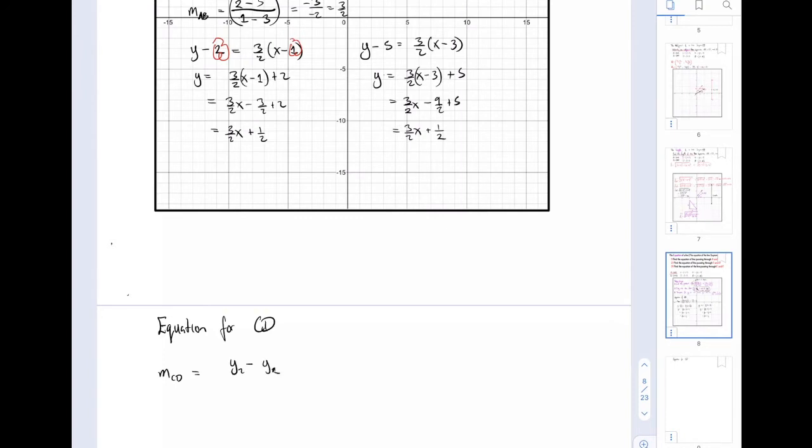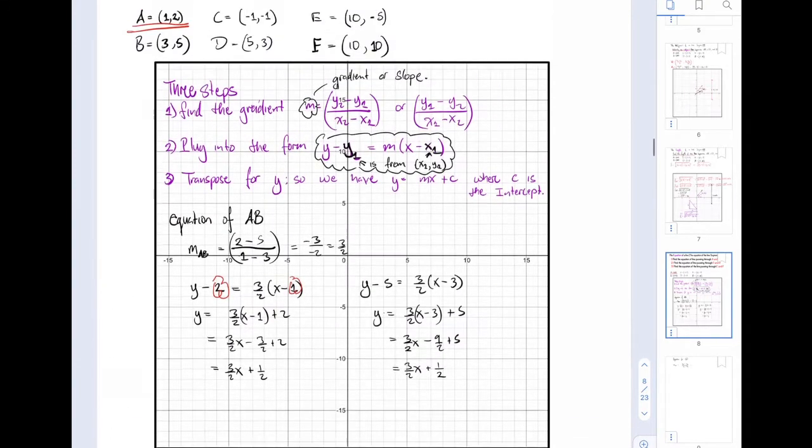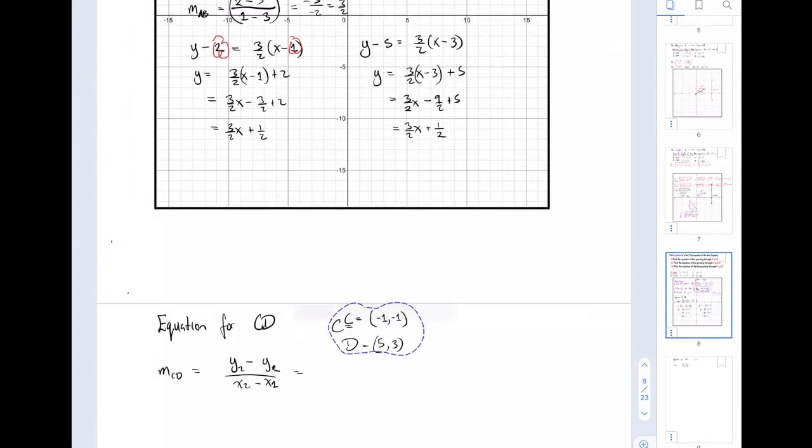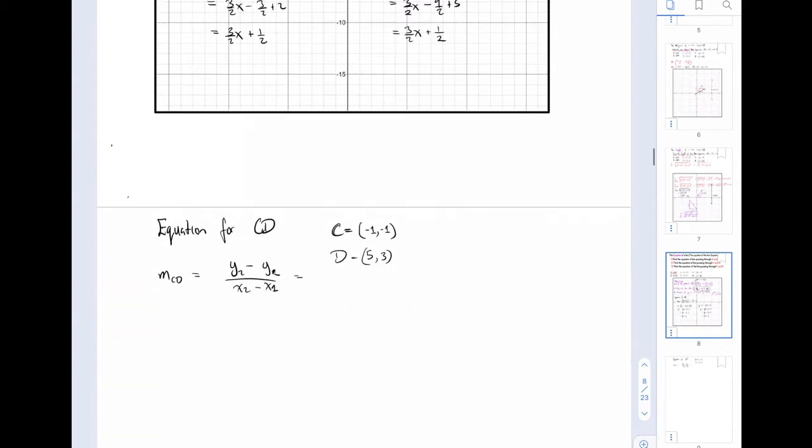The gradient formula is y2 minus y1 over x2 minus x1. Let's copy down the coordinates for C and D, and now we can continue to find this equation.